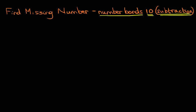You will recall when we did number bonds to 10 for addition, we wrote down some numbers on the left-hand side. We're going to do that again. We're going to start from 0 — in other words, we're going to use the same principles. We've got 0, 1, 2, 3, 4, and 5. Okay, now we stop. So we've got 0 to 5.